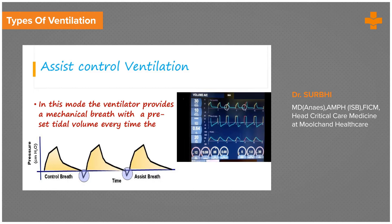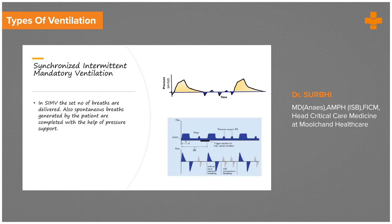The only disadvantage in Assist Control is that if the patient is triggering too often, you can have a high respiratory rate and respiratory alkalosis.